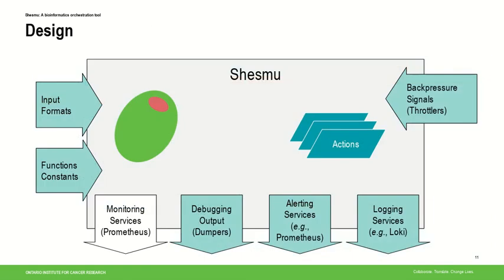Shasmut is designed to give you a large amount of control over what goes into the system. Everything in color is a plugin you can control. The OLIVs themselves are programs — you can provide support functions and data to them in any format you need, and they can produce debugging output that you can direct wherever you choose. Actions are also entirely pluggable, as are the input formats. Actions can make use of logging and alerting services provided as plugins. We currently support Prometheus and Loki for that, but others are not a problem. There is also a back-pressure system called throttlers that allow you to suspend actions until there is a more ideal time to run them.